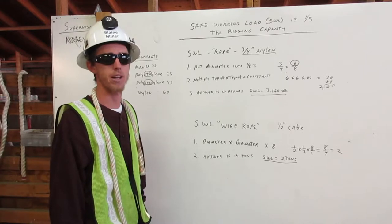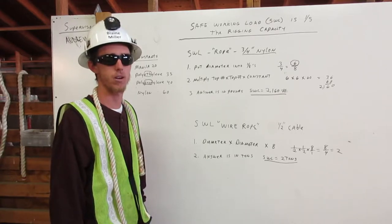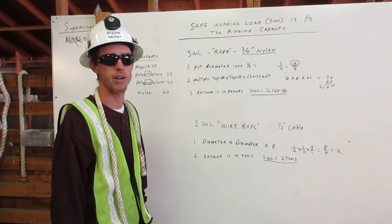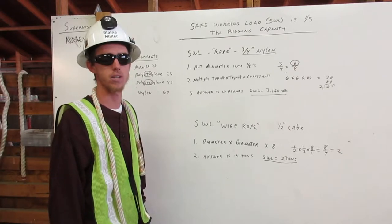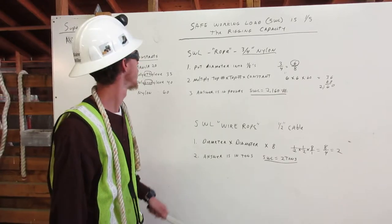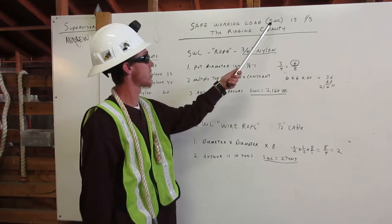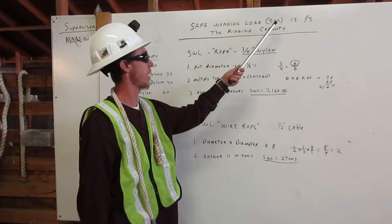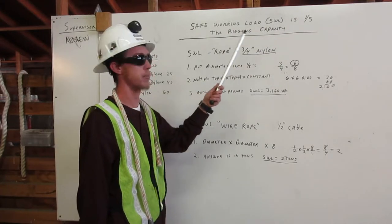I am going to explain how to calculate the safe working load for rope and wire rope rigging. This safe working load is a number that represents one-fifth of the rigging's capacity. Let me explain. Safe working load, SWL, is one-fifth the rigging capacity.